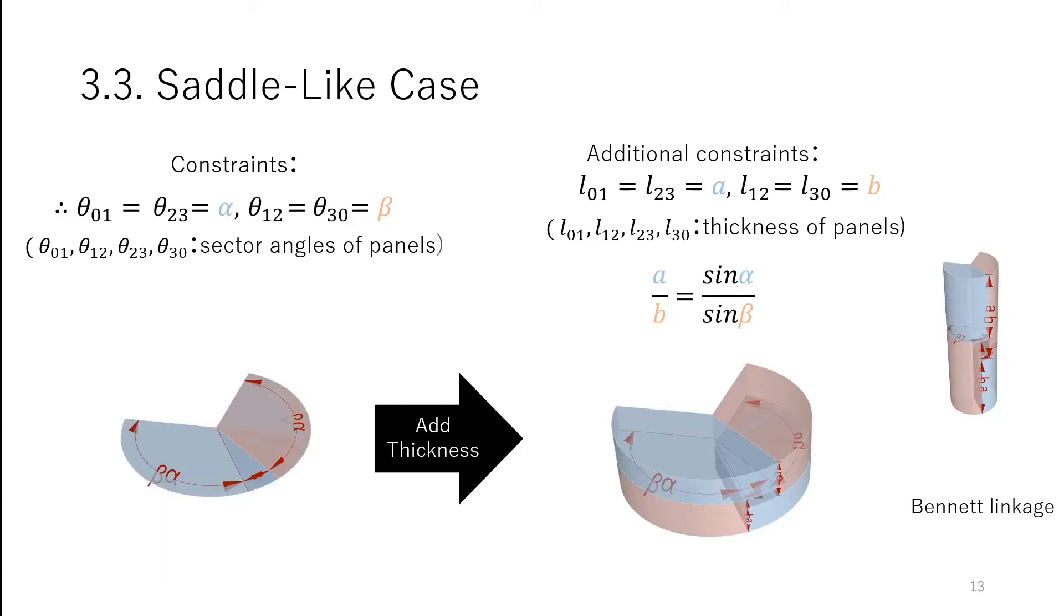Therefore, we obtain the constraints as shown. Transformable vertices satisfy conditions between thicknesses and sector angles.